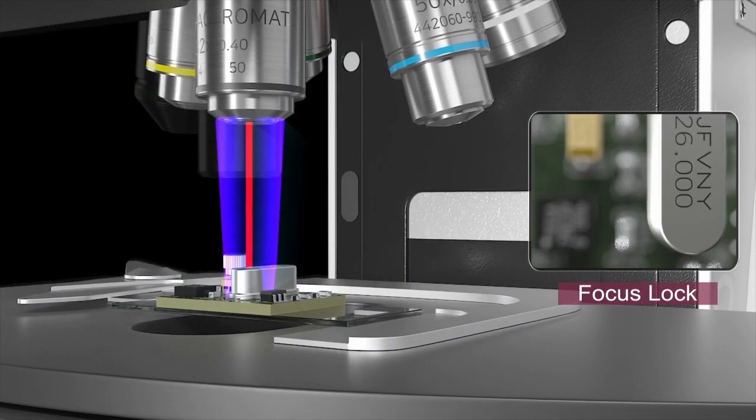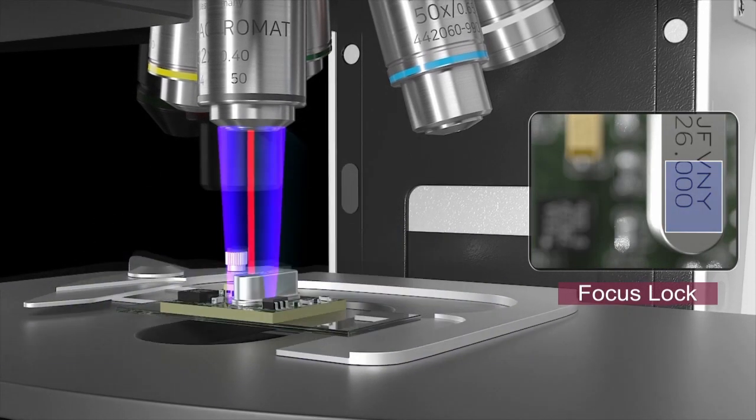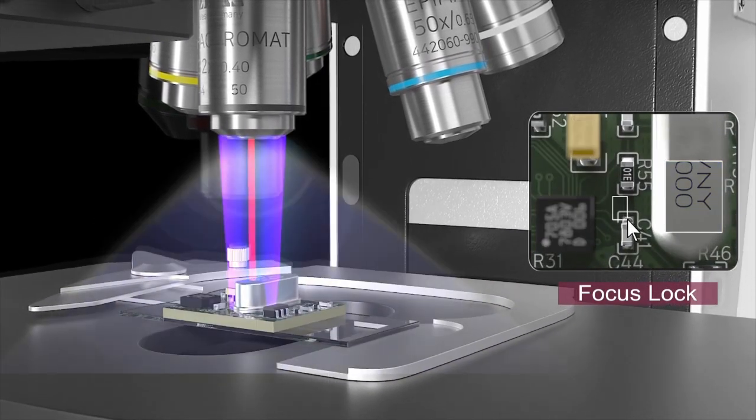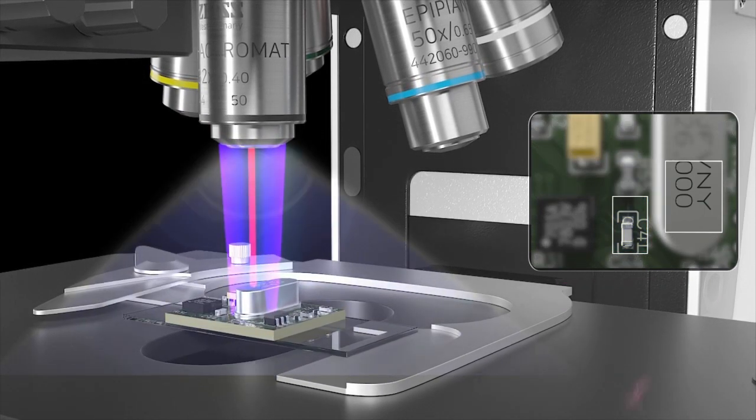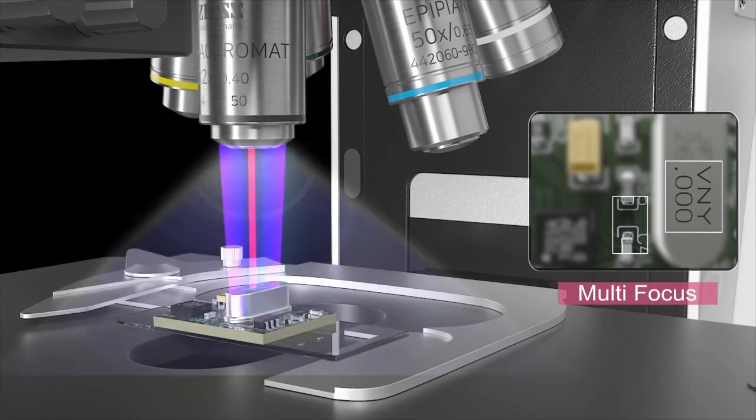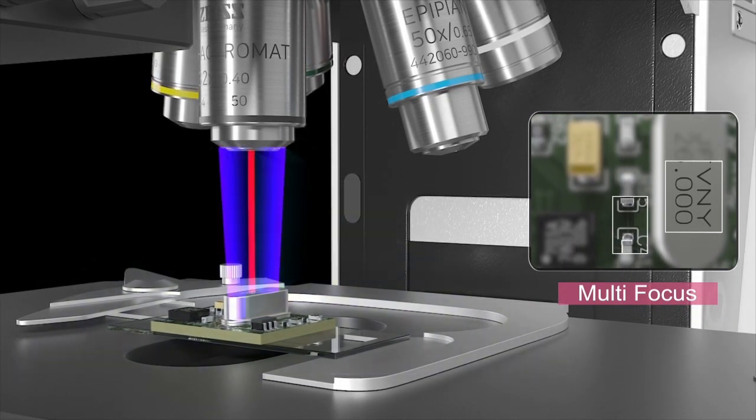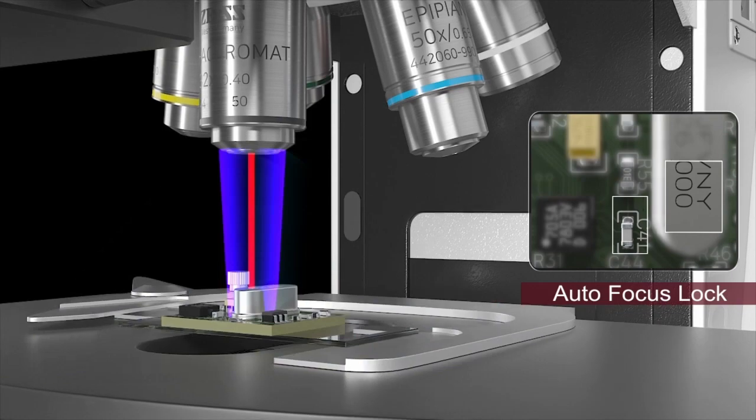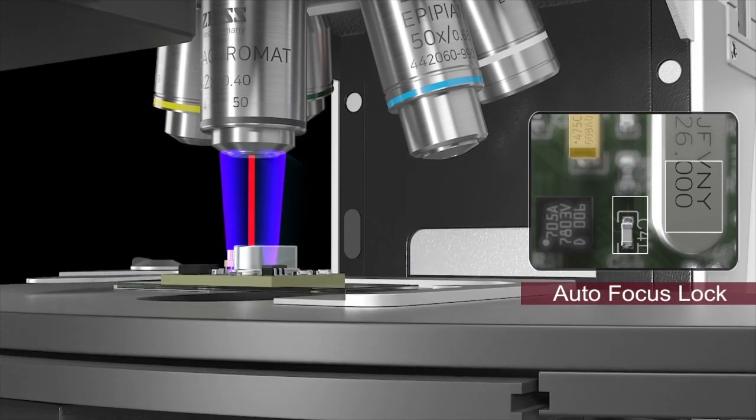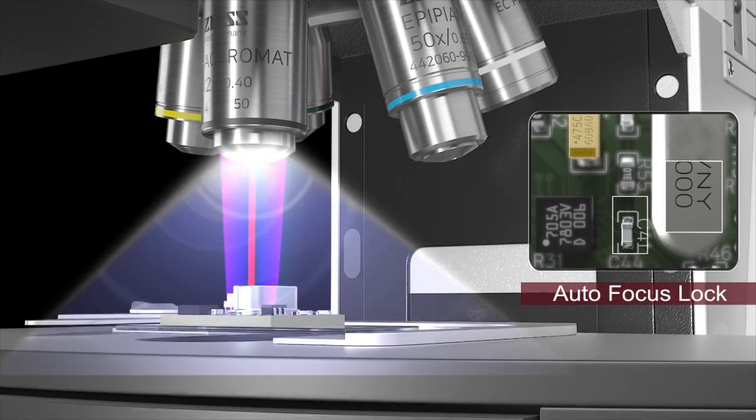Focus lock maintains focus when multiple focus ROIs are set in the z-axis. Multi-focus lock stays in focus even when moving the x and y-axis. Auto-focus lock retains autofocus during z-axis movement and others. These functions maximize user convenience.